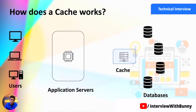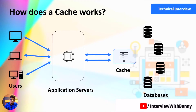We place a cache server between the application server and the database. With a cache in a distributed system, the user first requests data from the application server. The application server then checks whether the data is available in the cache. If it is, it returns the response within a fraction of a second. Otherwise, if the data is not present in the cache, it fetches the data from the distributed database and returns the response to the application server, completing the cycle.